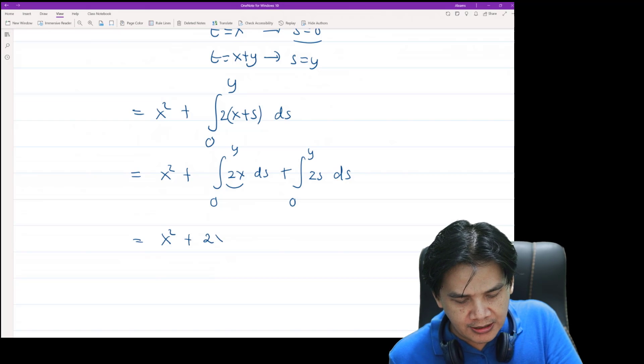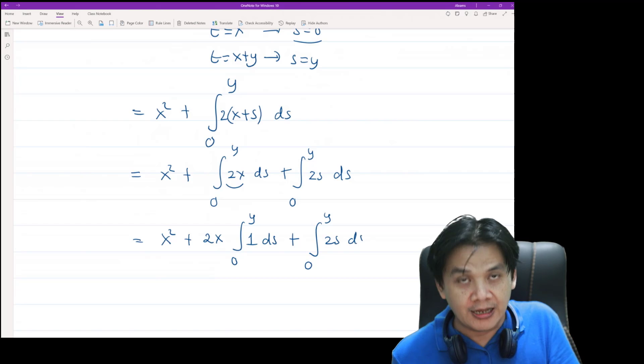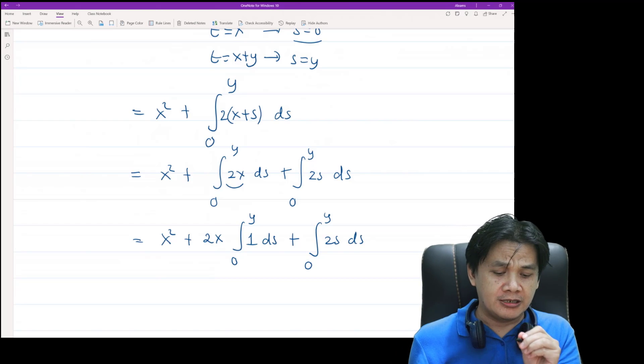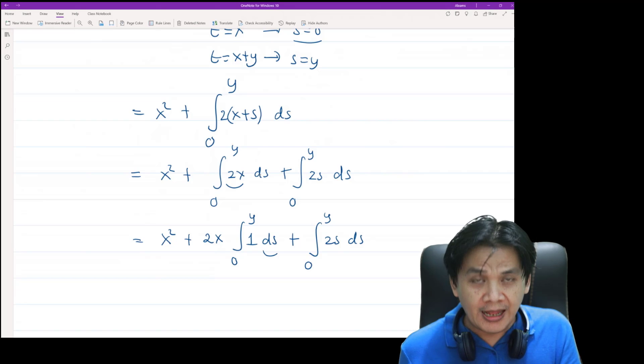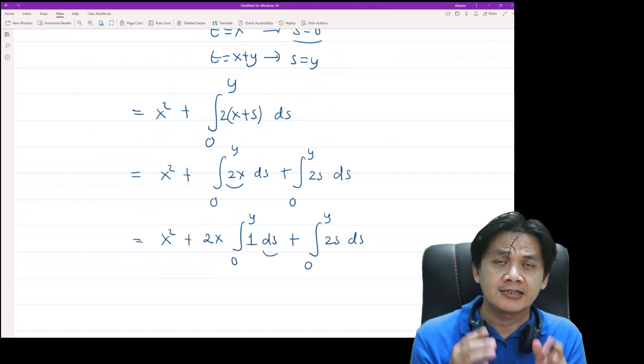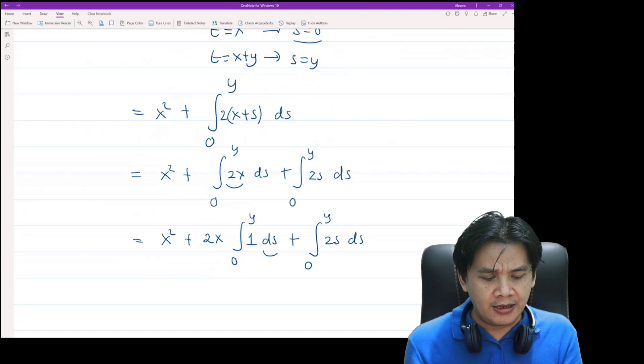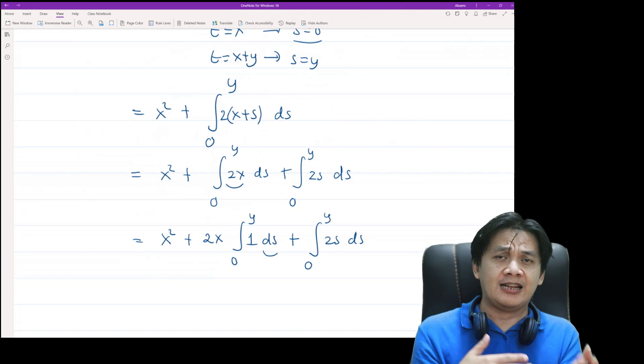Now look at this expression carefully. Remember that s is nothing but a dummy variable, so we can think of this as well as the integral of 1 dt from 0 to y, and the second integral is exactly the same as x and x squared.